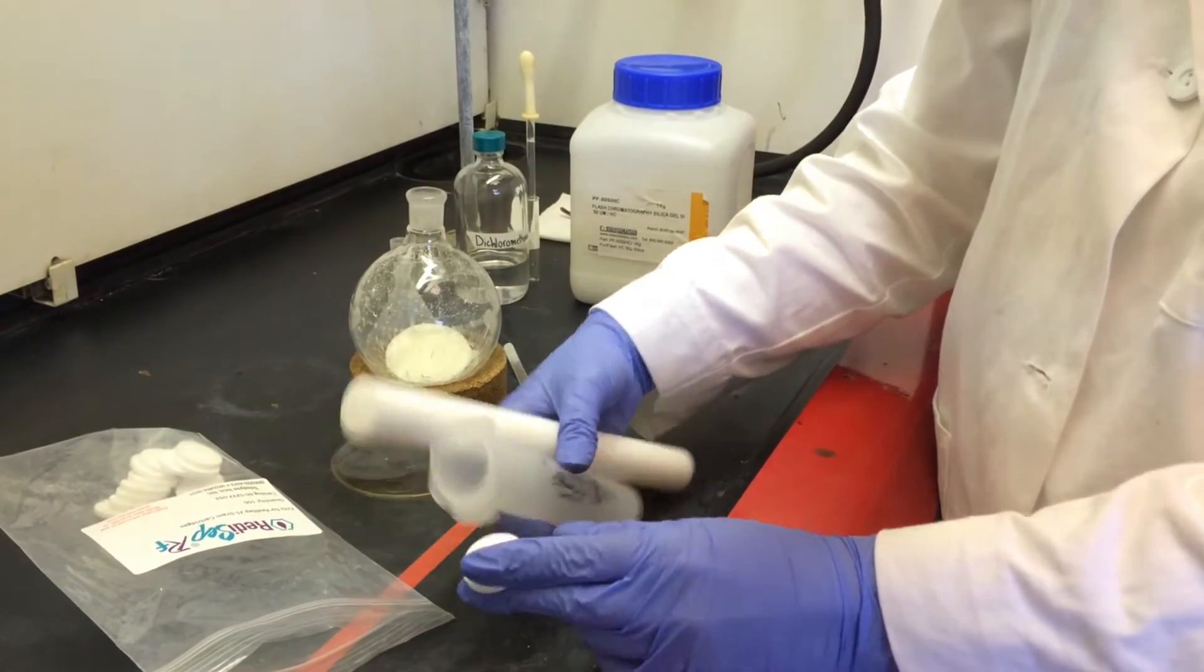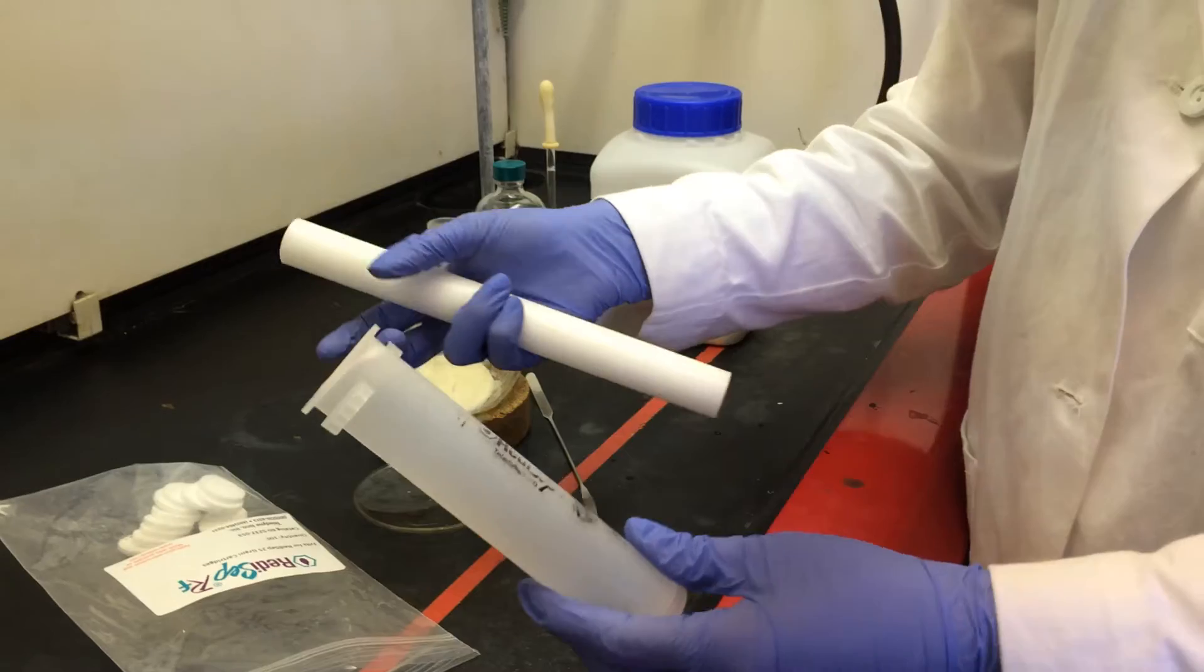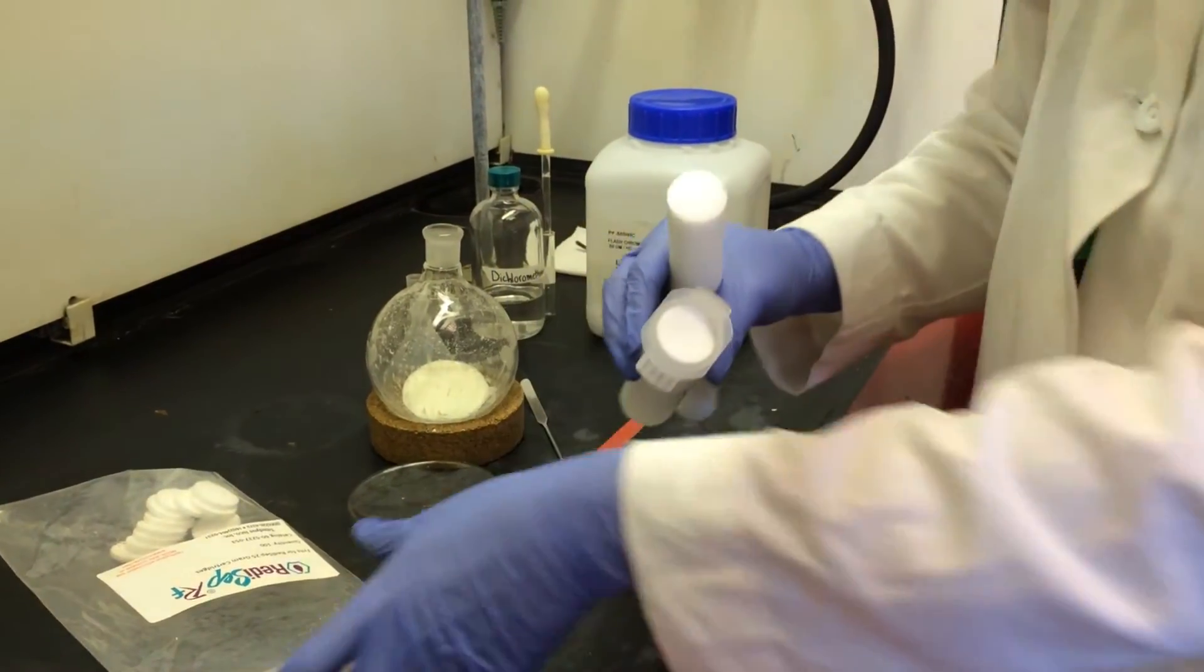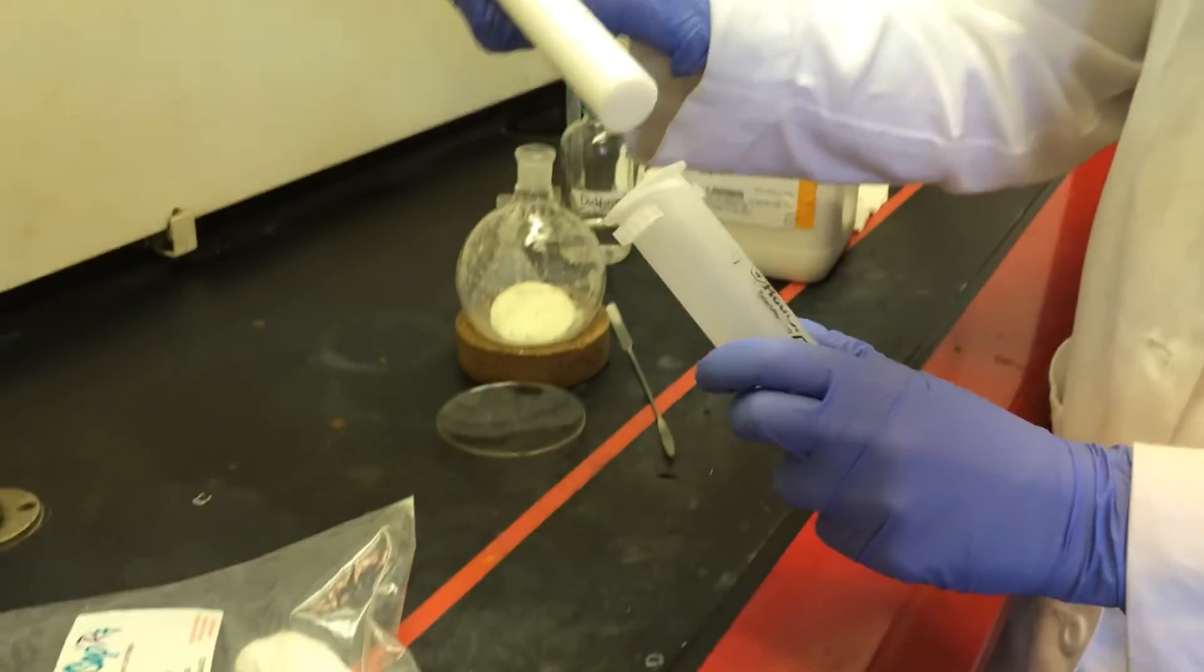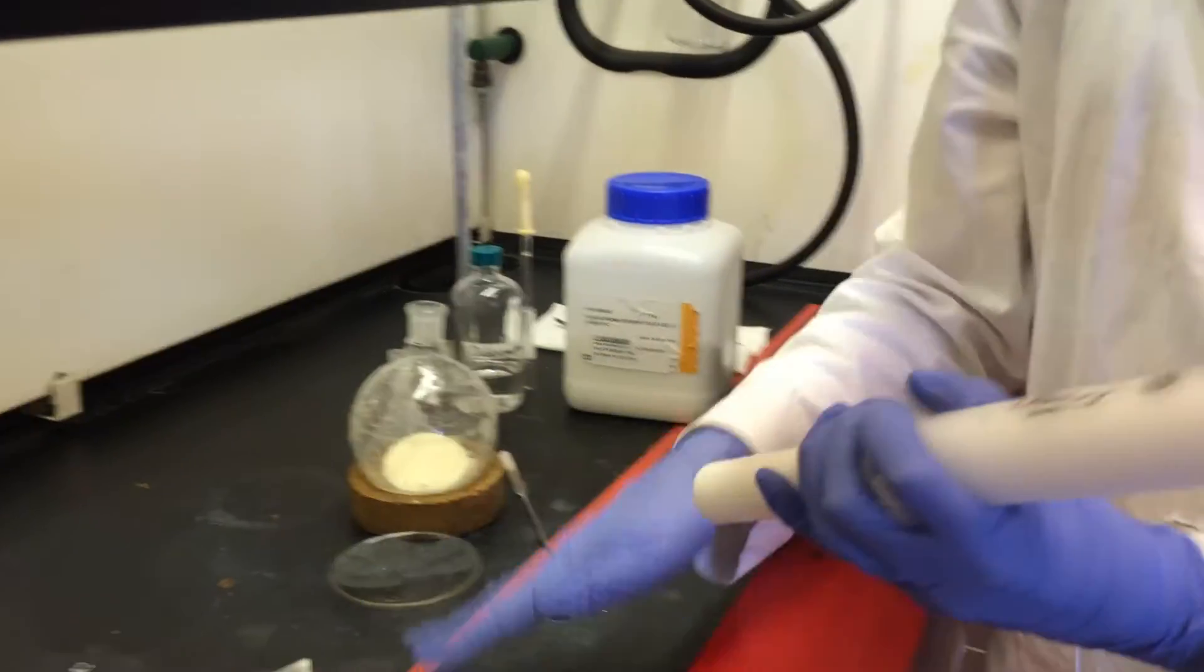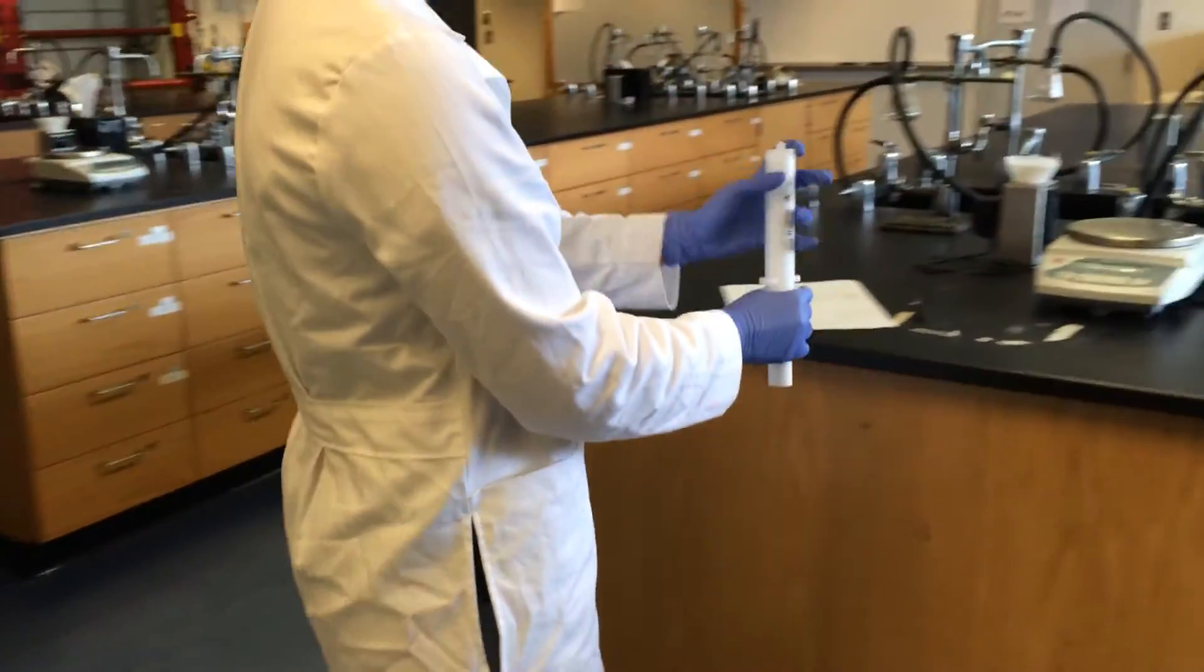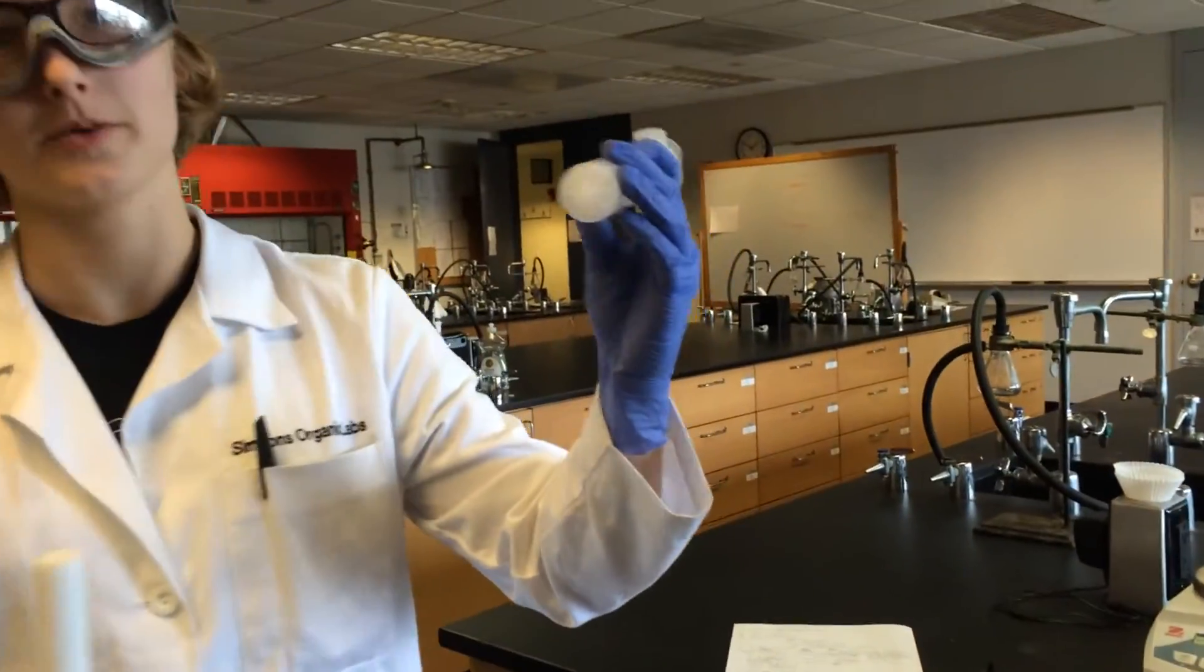Now that your sample is all set, we can begin prepping the cartridge. So first, you want to put in one of these little pieces called a frit before you do anything else. Then you use a PVC pipe, bang it not in the hood, on one of the countertops to get it to stick to the bottom.